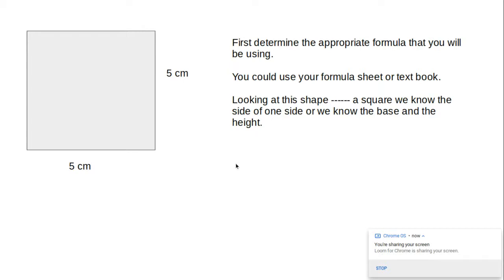So today we're going to be reviewing the surface area of a square or a rectangle. Taking a look at the shape, it's a 5 by 5 centimeter object. First thing we've got to do is determine the appropriate formula that we're going to be using. Now if you take a look, you can either use your formula sheet, you can use your textbook, maybe you know it off the top of your head. We don't have all our pretty whiteboards that it's written down, so we just kind of have to remember what to do.